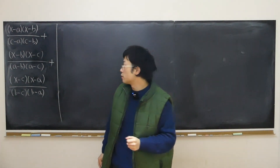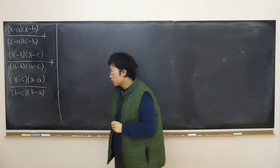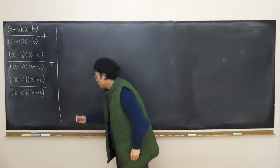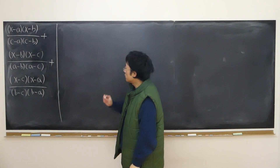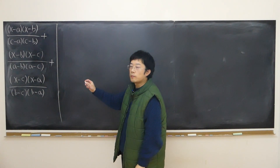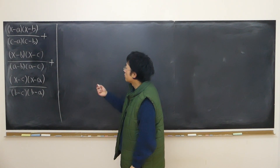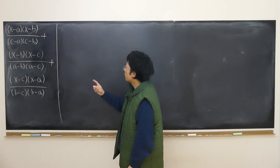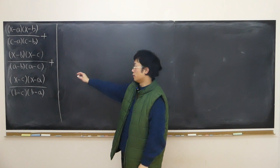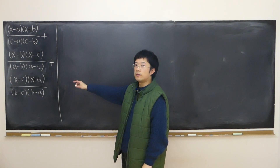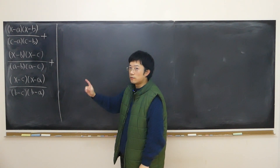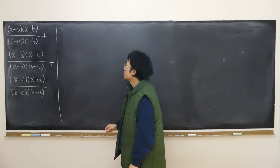We want to simplify this long expression. There are basically two different ways. The first method: I'm going to find their common denominator and then multiply the numerator out and keep the denominator, because we hope in the end we can just cancel out the denominator without even expanding it.